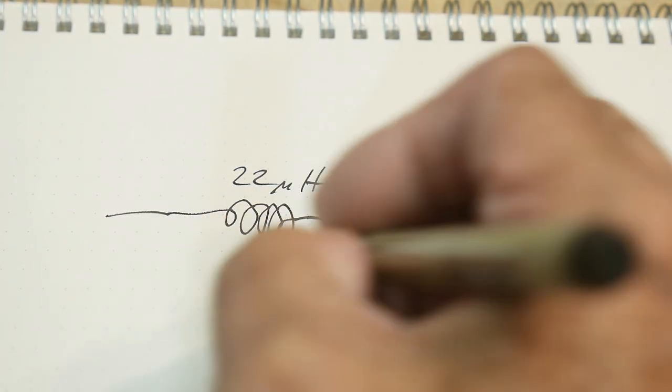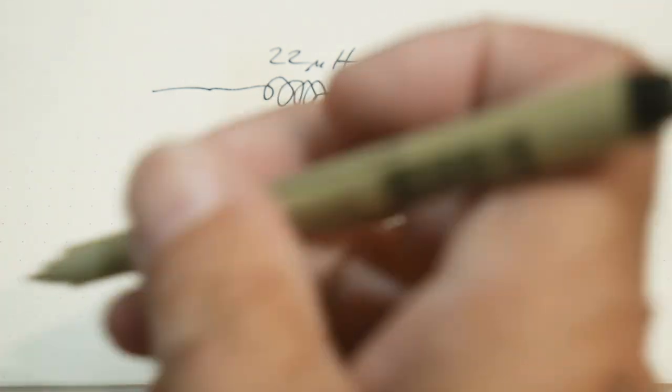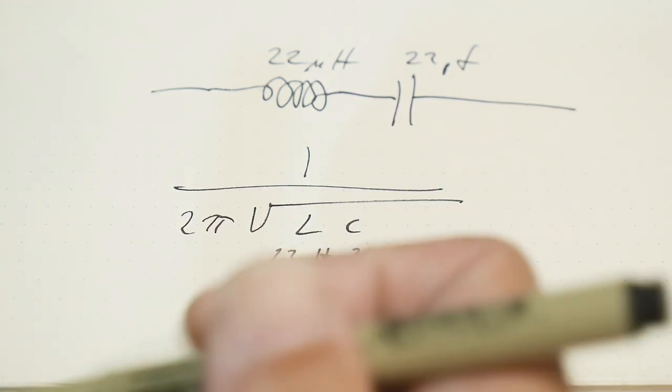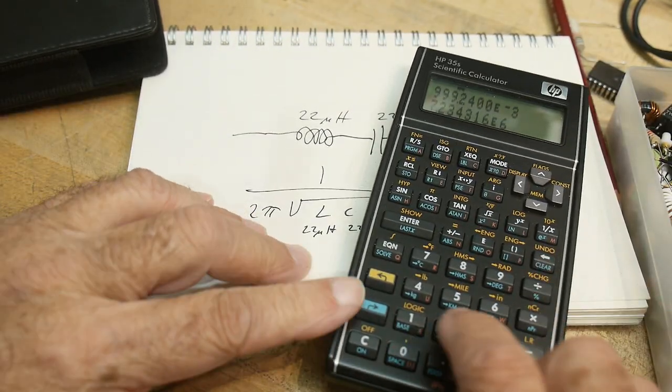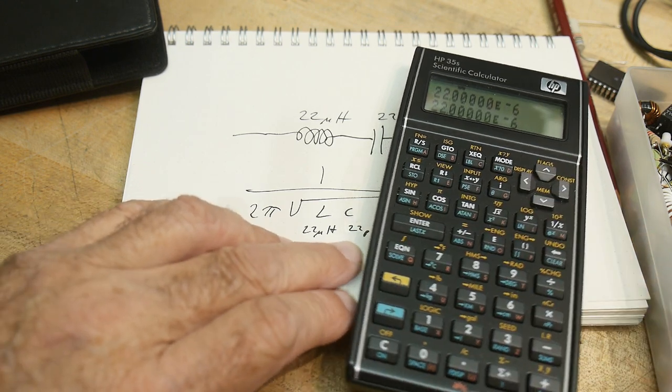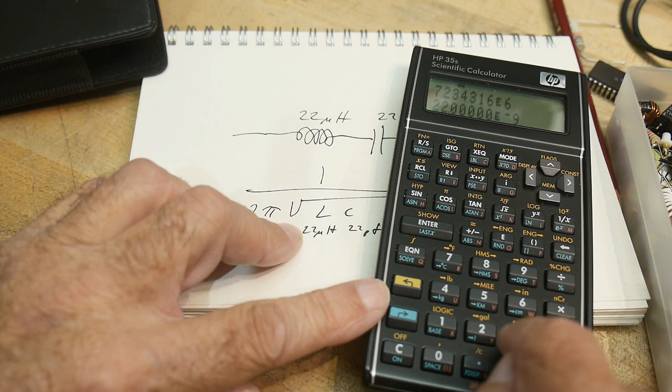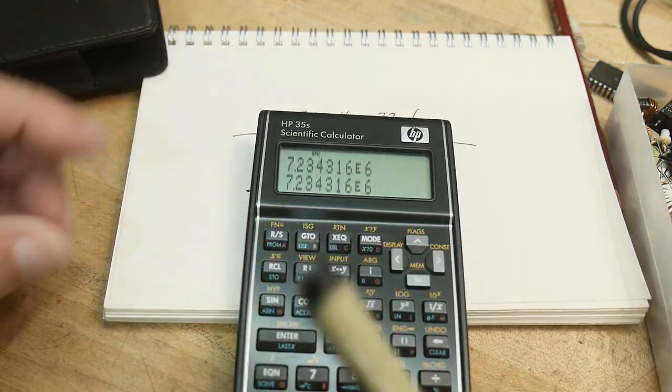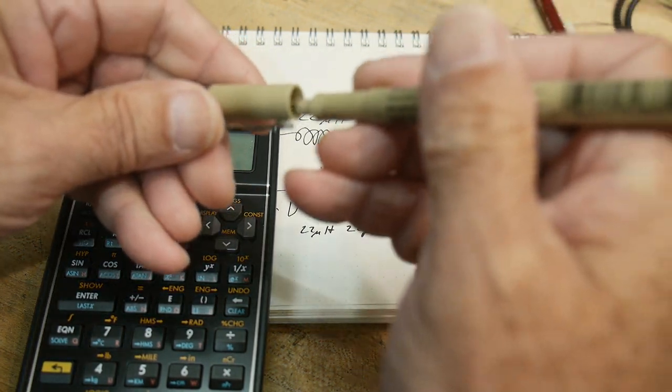So we have 22 microhenry and 22 picofarad. In a series resonant circuit we have a particular formula: one over two pi times square root of LC. You can find this in books. Our L is 22 microhenries and our capacitance is 22 picofarads. We can get out our calculator - 22 micros and 22 picofarads, the square root of that, two times that, pi times that, and one over that - we have 7.23 megahertz.